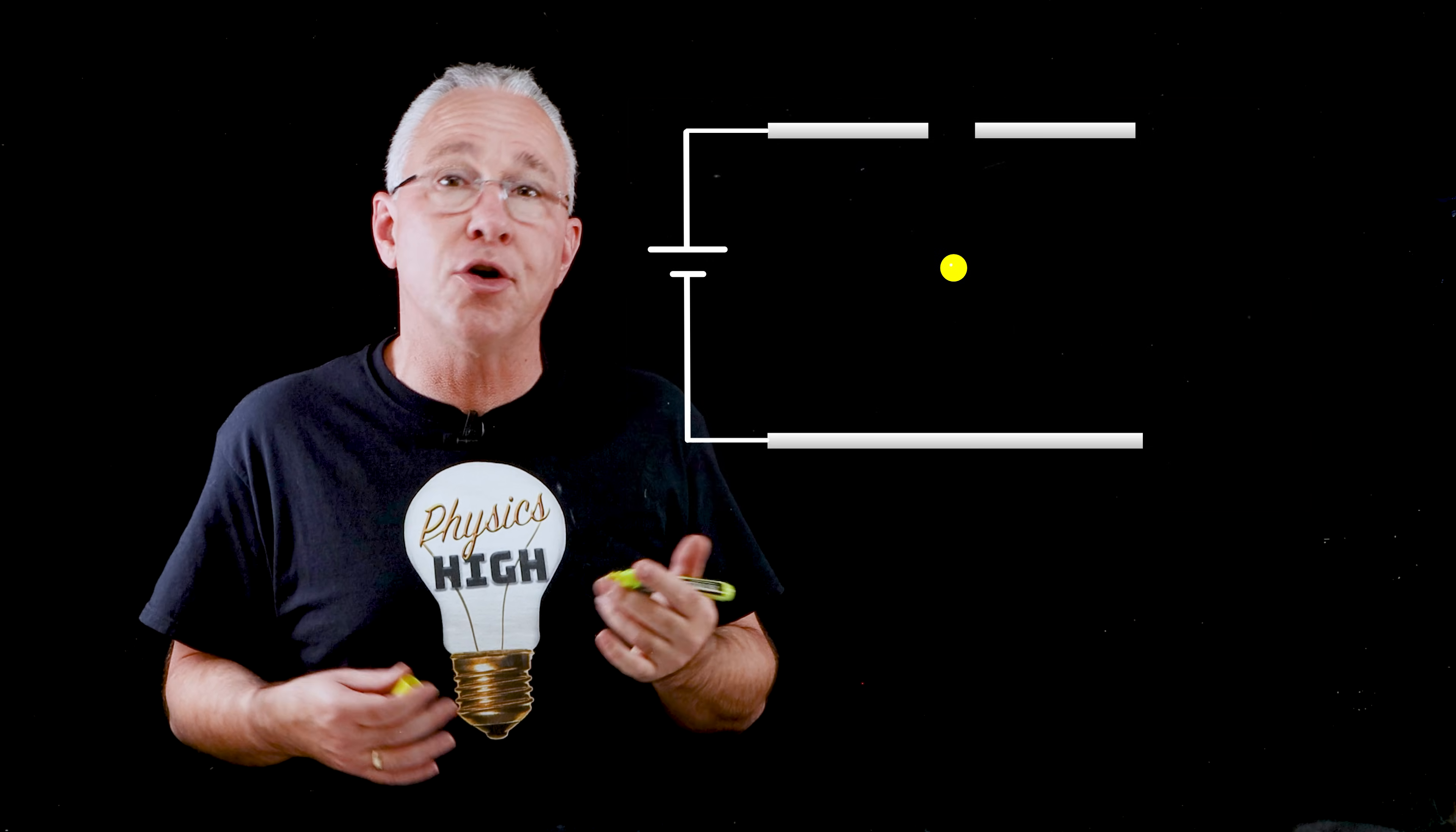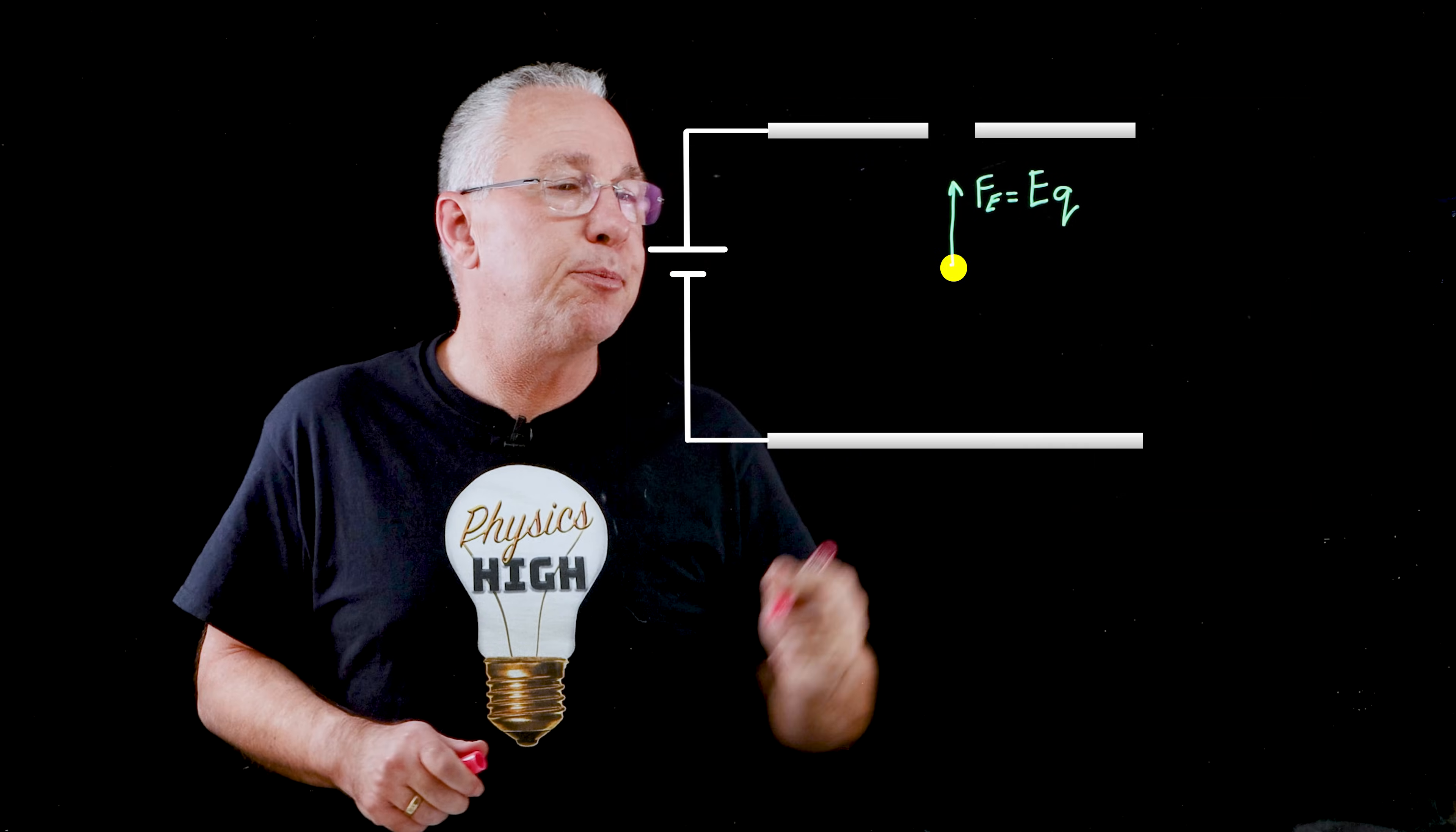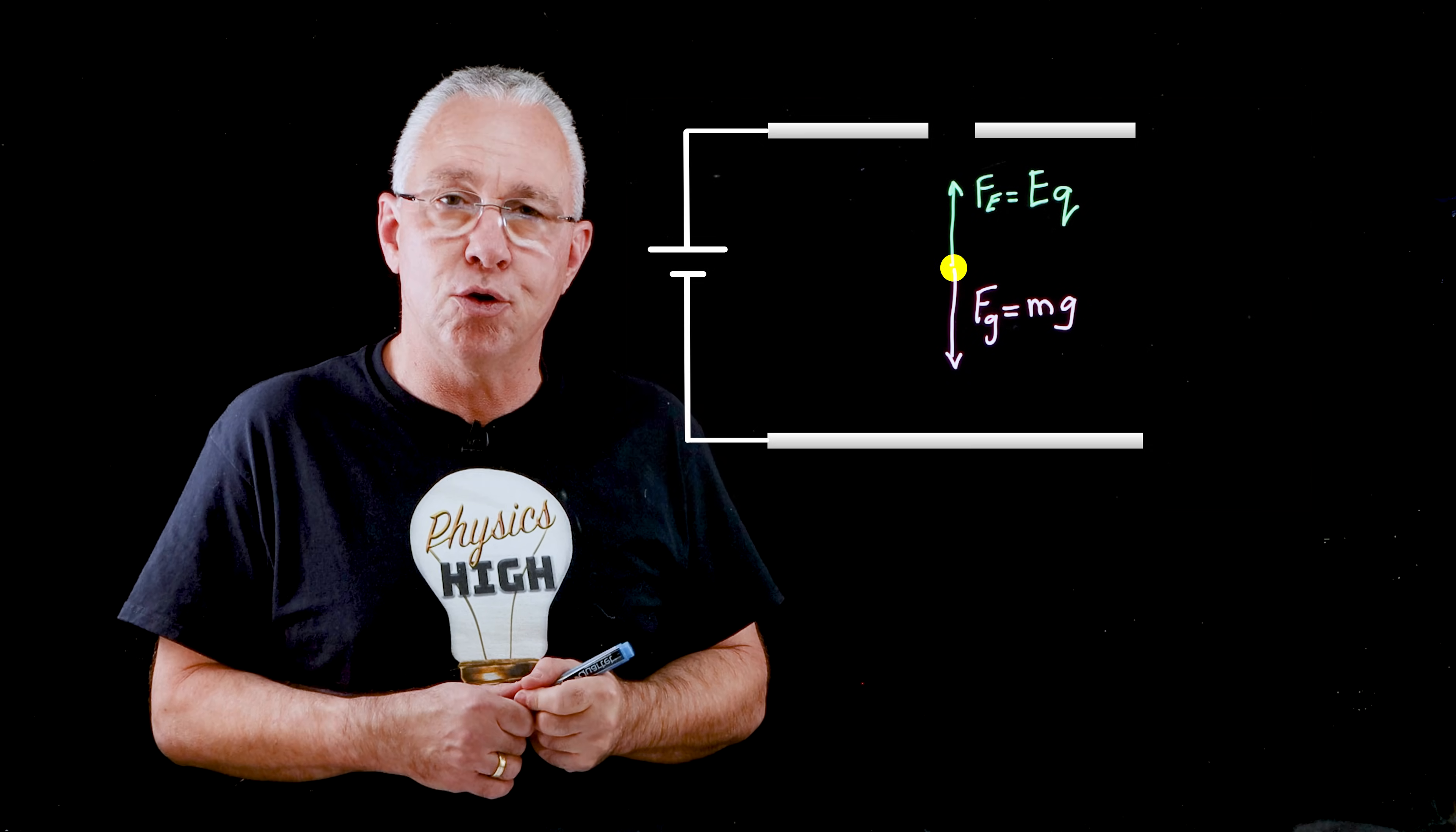Let's take a closer look. What we have here is an oil drop that is stationary which means it's experiencing two forces in opposite direction. The first is the force due to the electric field which is equal to EQ. The other force it's experiencing is a force in the downward direction which is the force due to gravity which is equal to the mass multiplied by the acceleration due to gravity. Because these two forces are equal we can therefore equate those two equations.